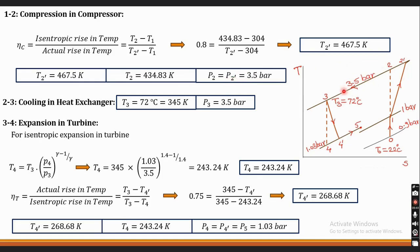Next, process 2' to 3 — the heat exchanger, where cooling takes place. The numerical states that after the heat exchanger the temperature is 72°C, so T3 = 345 K and pressure P3 = 3.5 bar.